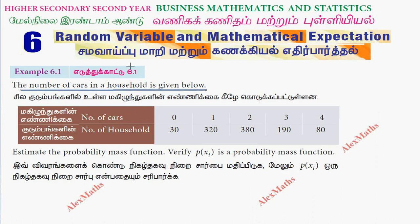That is, how many families are there. Zero cars are 30 families. One car is 320 families. Two cars are 380 families. Three cars are 190 families and four cars are 80 families. We estimate the probability mass function.